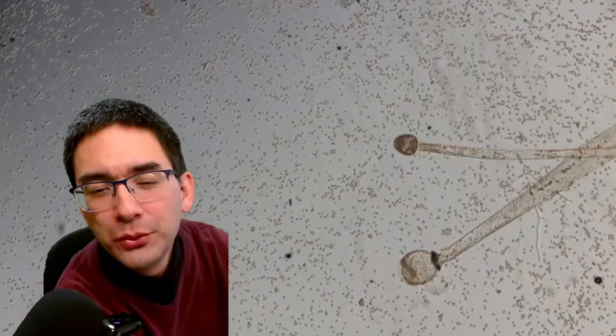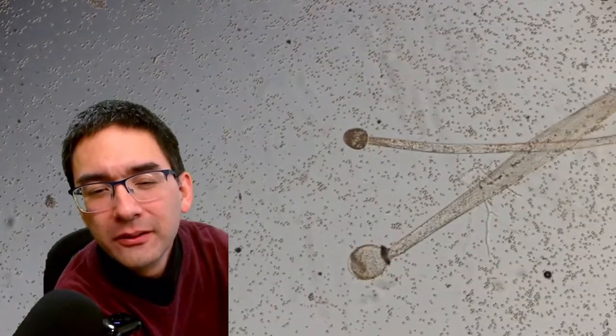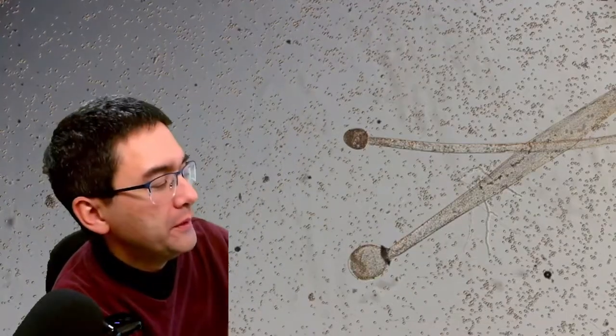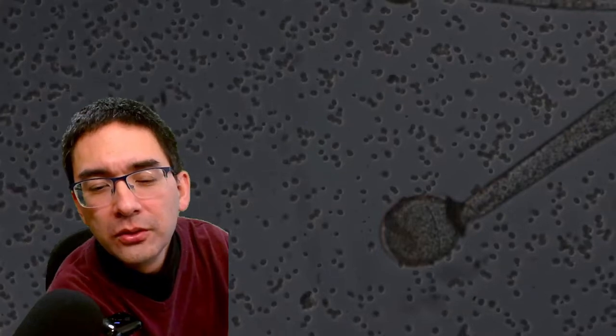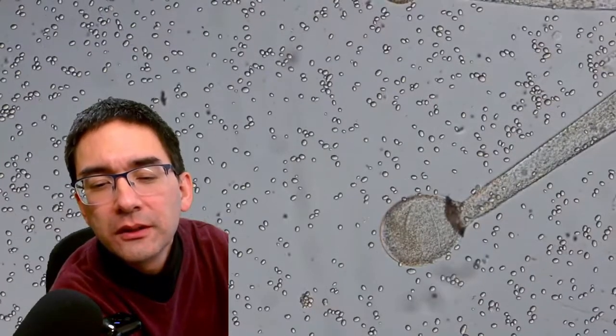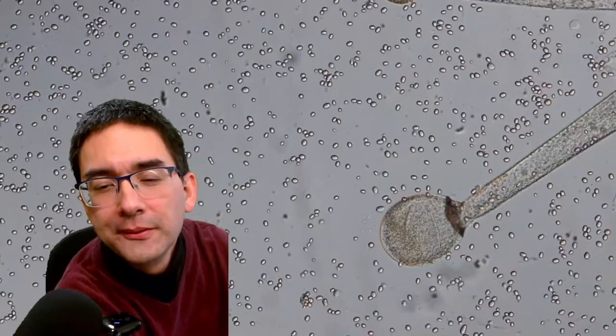Could this be one of these fruiting bodies? Basically the spores are formed in these round bulb-like structures. And then when they pop open they release those spores. Here we go. Need to make it a little bit brighter. Here we go.